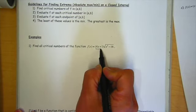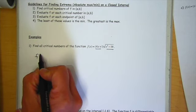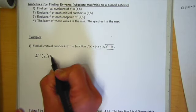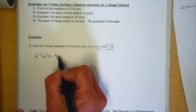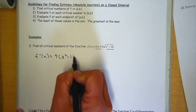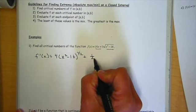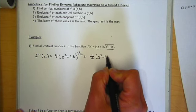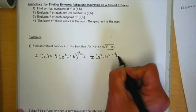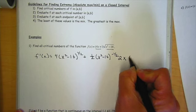So I'm going to use the product rule here to find my derivative. So f' of x is going to be the derivative of the first, which is 4, times the second, plus the derivative of the second, bring down the one-half, reduce the power by 1. Don't forget chain rule on the inside is 2x, all times the first.